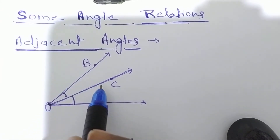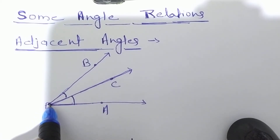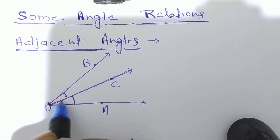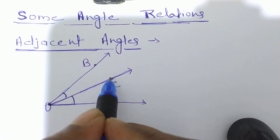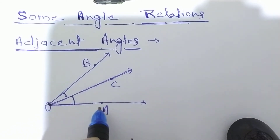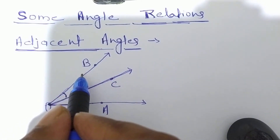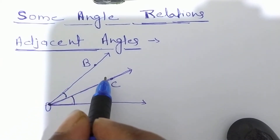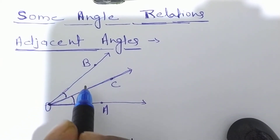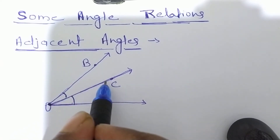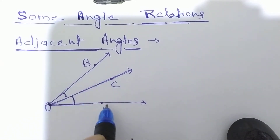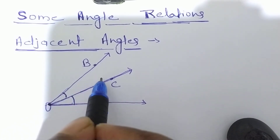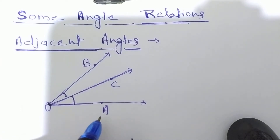Both BOC and AOC are adjacent angles because they have a common vertex O. Also, they have a common arm OC. And the distinct arms OA and OB lie on the opposite sides of line OC. Therefore, angle AOC and angle BOC are adjacent angles.